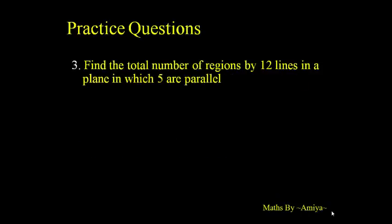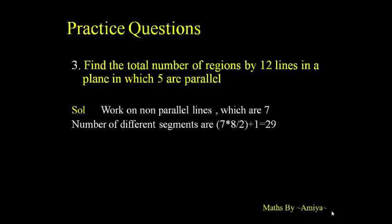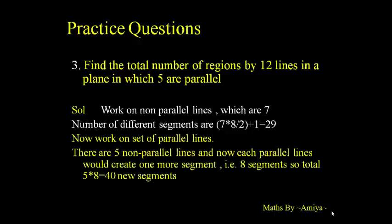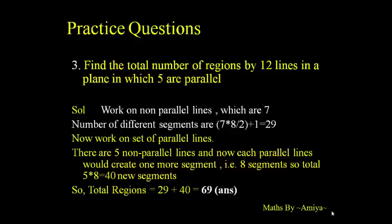Question 3: find total number of regions by 12 lines in a plane in which 5 are parallel. Work on the 7 non-parallel lines first: σ7 + 1 = 7×8/2 + 1 = 29. Then each of the 5 parallel lines creates 8 new segments (7 + 1 = 8), so 5×8 = 40 new segments. Total regions = 29 + 40 = 69.